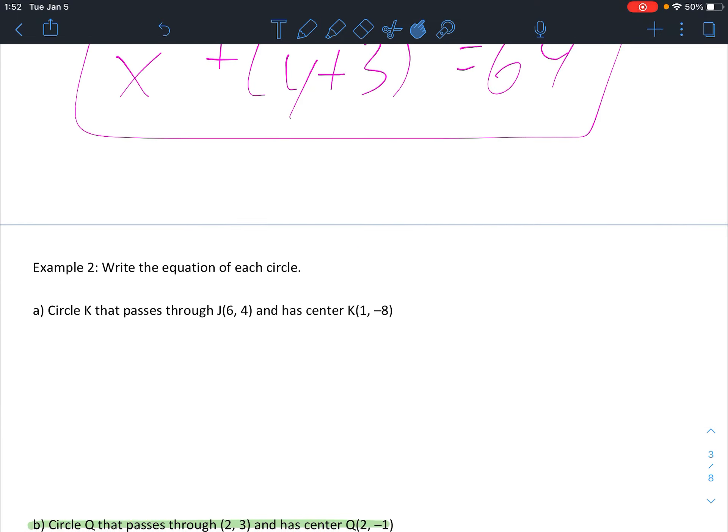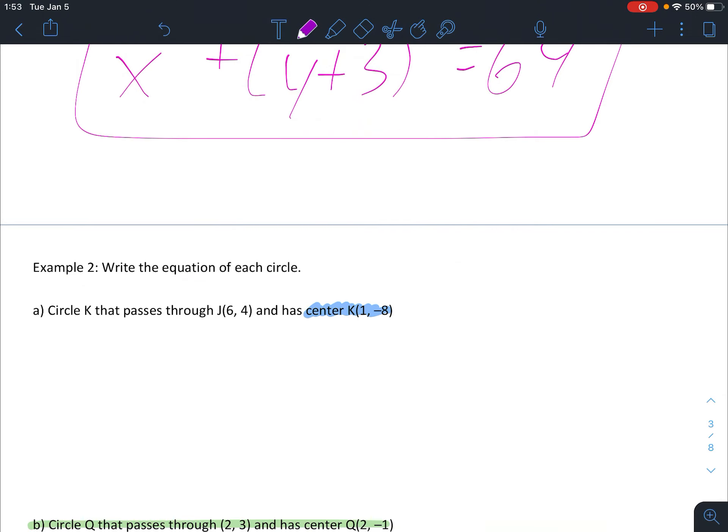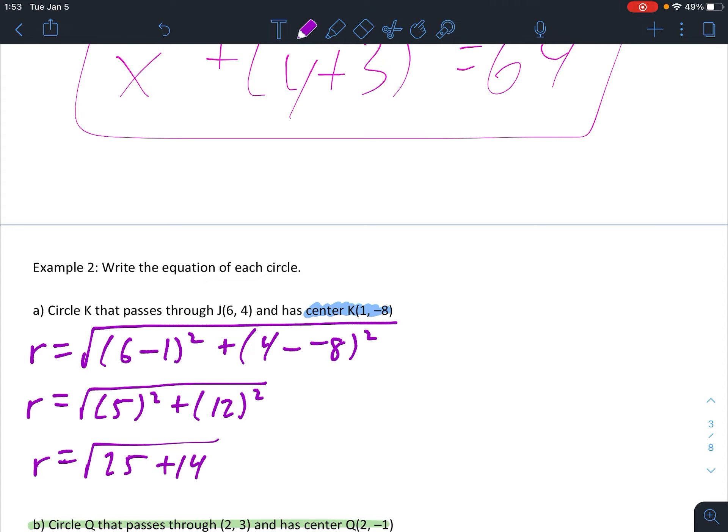Problem two, write the equation of the circle. So again we need a radius and a center. We have the center, so that's good. But we don't have the radius. We have to find the radius. How do we find the radius? Just like we did in the opening slide. We're going to use the distance formula. So the radius equals x minus x squared plus y minus y squared. That's 5 squared plus 12 squared, which is 25 plus 144, which is root 169. And that's actually a whole number. So that's good. The radius is 13.